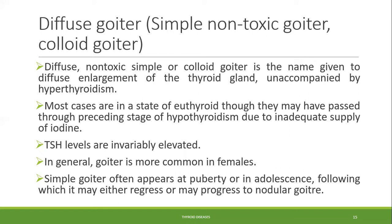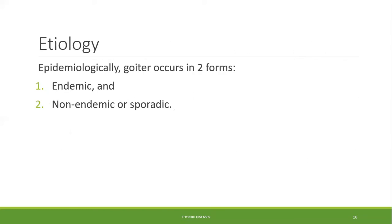Simple goiter is more common in females compared to males. It often appears at puberty or in adolescence, following which it may either regress — meaning the gland will shrink — or it may progress to nodular goiter. So nodular goiter is like the next step of diffuse goiter.